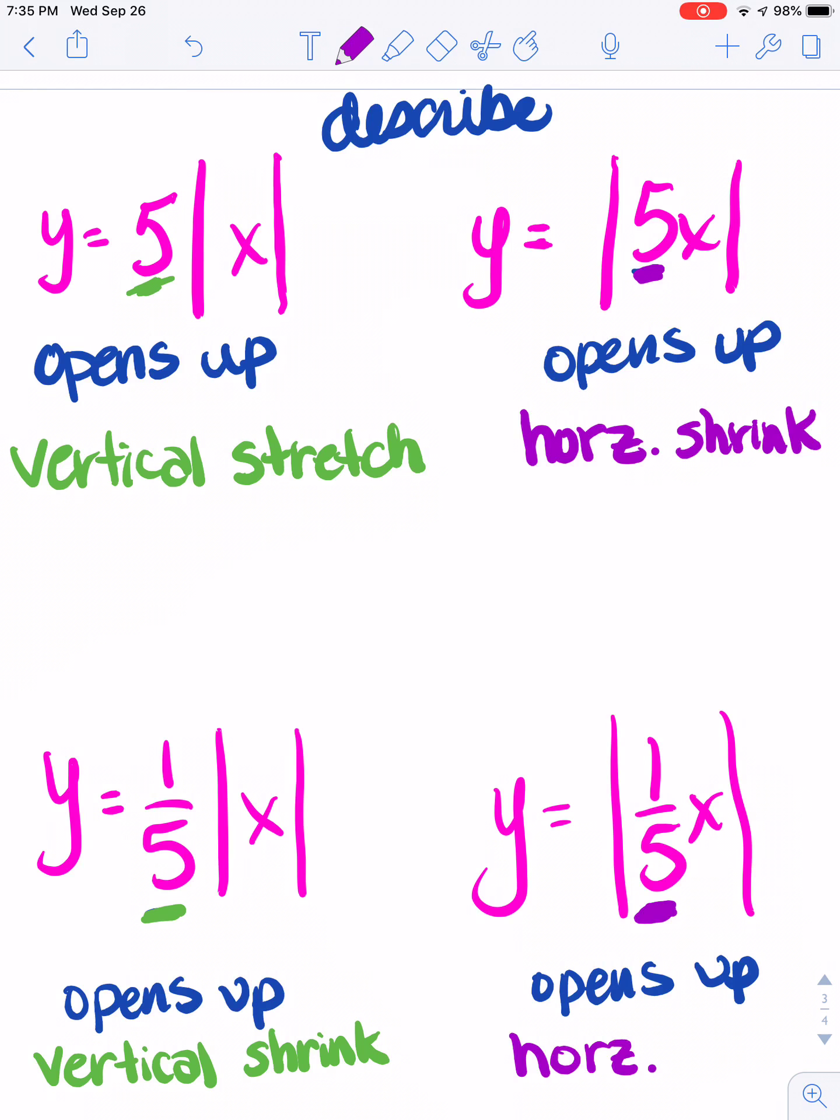Because this number right here is between 0 and 1, that's going to be a stretch. That's the big stuff you have to be able to do for tomorrow. Now that's from our basic understanding and looking at the graphs.